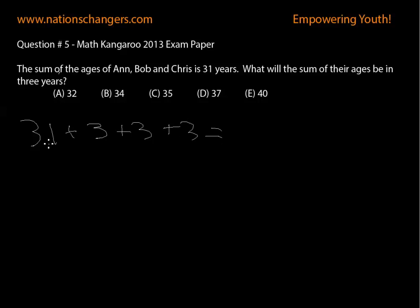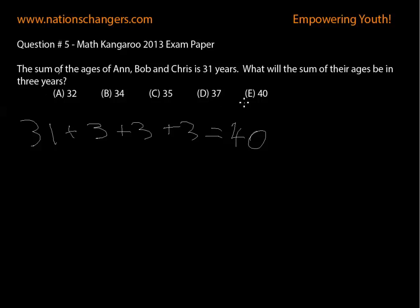And then, if we do the addition: 31 plus 3 is 34, 34 plus 3 is 37, and 37 plus 3 is 40. We would get 40 as our final answer, which would be the sum of all their ages in 3 years. So the answer for this question would be 40.